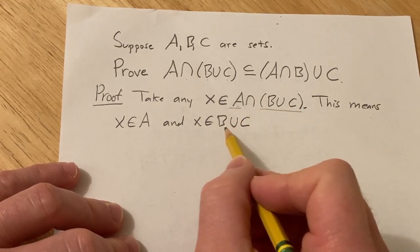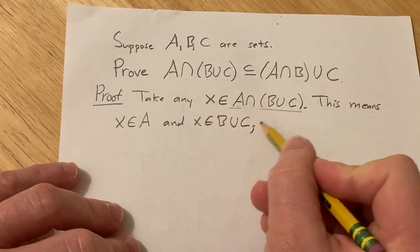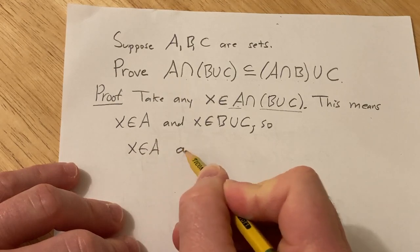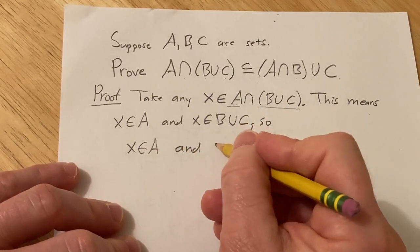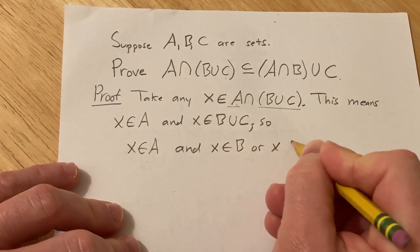But now we can take it a step further and indicate what it means for x to be in this set here. So this means that x is in A and, well, what does it mean to be in B union C? It means x is in B or x is in C.